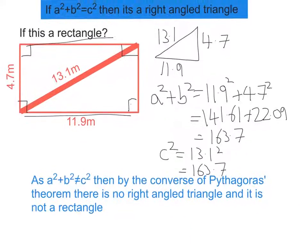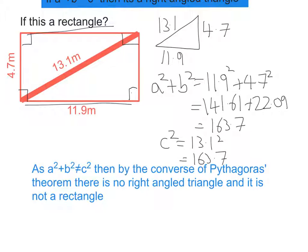So let me just move that up. So I would say, as A squared plus B squared does not equal C squared, note that little symbol there, then by the Converse of Pythagoras' theorem, there is no right-angled triangle, and it is not a rectangle.